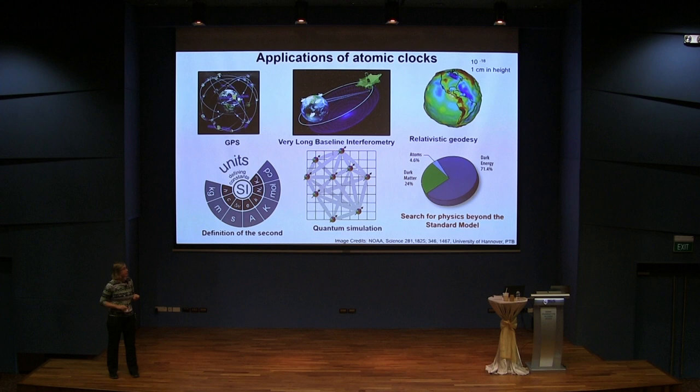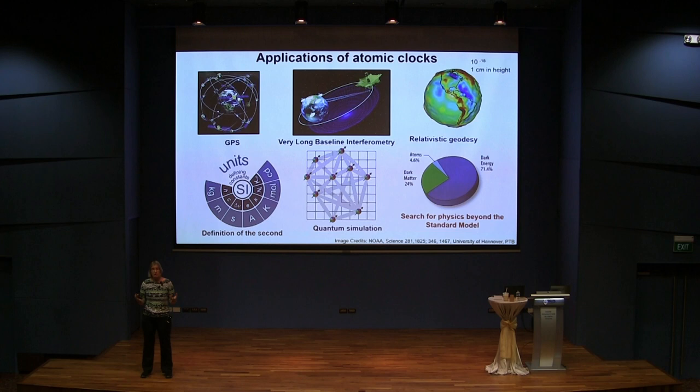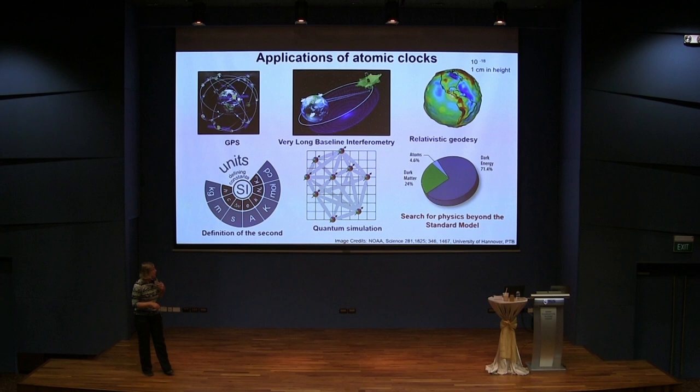One of the applications is very long baseline interferometry — who's seen the picture of the black hole? That was done with long baseline interferometry. The second is now defined through the atomic clock, currently through cesium. Also, clocks are great many-body devices. When you have a clock with optical lattices, you actually have a quantum degenerate gas — quantum degenerate atoms sitting in each of their sites — and you can do very interesting many-body simulations. But what I will talk about today is using clocks to search for physics beyond the standard model.